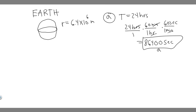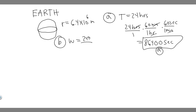So 86,400 seconds is your answer to A. Now let's move on to B. For B, what we're trying to find is the angular velocity of the earth. We denote angular velocity with the Greek letter omega. The way to find omega, if you have the period which we got in the last problem, is using this: omega is equal to 2 pi over T, the period. You can use this formula to solve for omega given T.